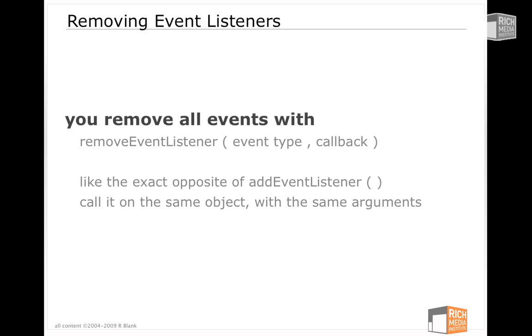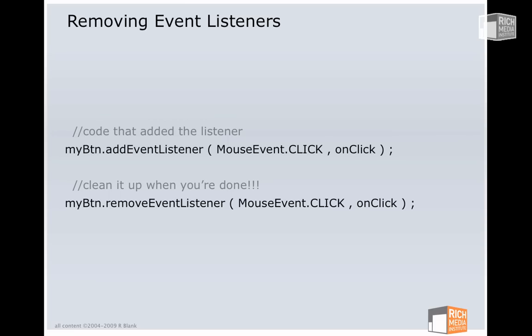The way you remove a listener is with removeEventListener, and you call it with the exact same arguments that you called addEventListener. It does not trigger an error if you remove an event listener that wasn't added — just like you can listen for an event that never fires without triggering an error. So as we see here, the code to remove the onClick callback function on myButton uses the exact same arguments, except we're using the removeEventListener method.